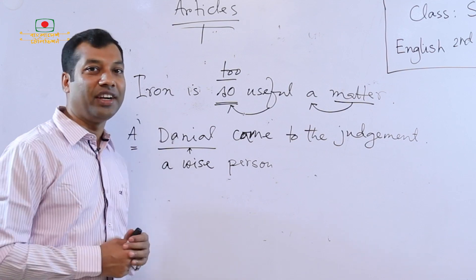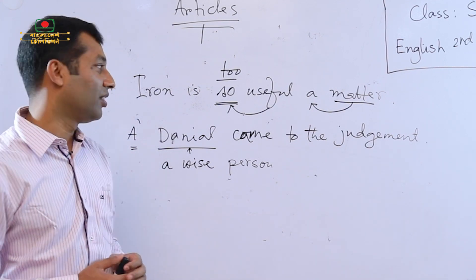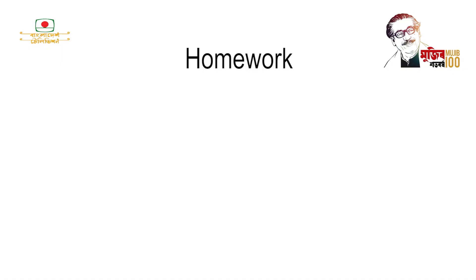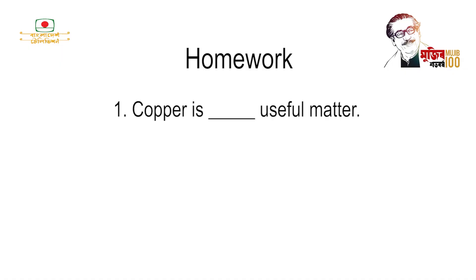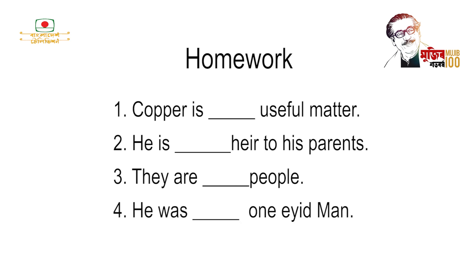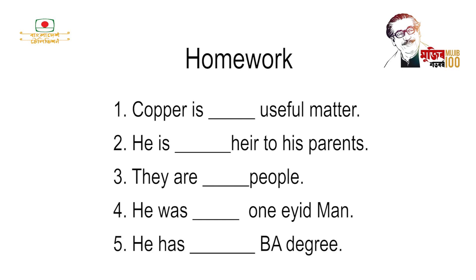So this is all about the use of indefinite articles — the use of A and AN. Now let me give you some homework. Number one: Iron is ___ useful matter. Number two: He is ___ heir to his parents. Number three: They are ___ people. Number four: He was ___ one-eight man. And number five: He has ___ BA degree. You must do the homework at home, and after reopening of your school, you must have it checked by your subject teacher.